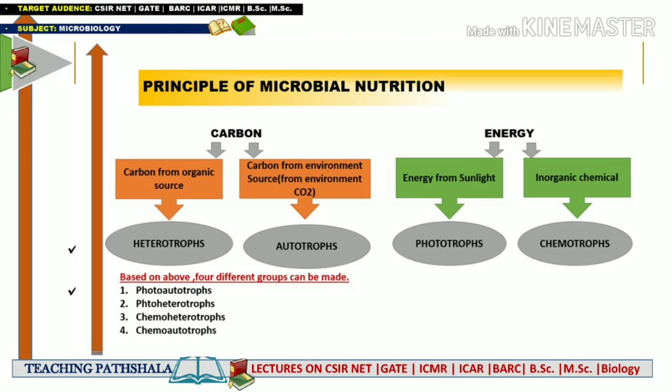Now let's talk about the energy source. Depending upon the energy source, microorganisms are categorized into two groups: phototrophs and chemotrophs. Phototrophs are those microorganisms which get their energy from sunlight, while chemotrophs are those microorganisms which take their energy from inorganic chemicals.